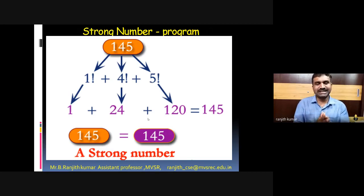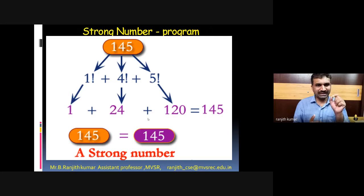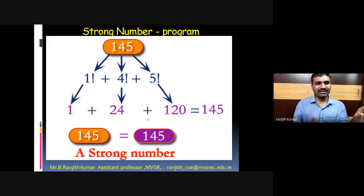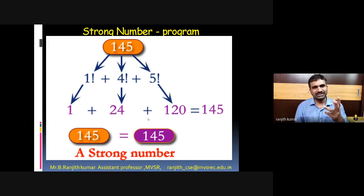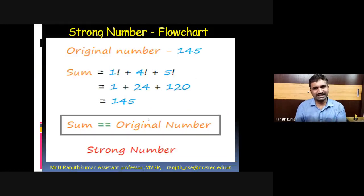If the sum and the original number are both equal, then it is called a strong number. If you observe in the picture, 145 is a number where every digit is separated: 5 factorial plus 4 factorial plus 1 factorial. The answers are 120, 24, and 1 — if you add them we get 145, so the original number and sum are equal.